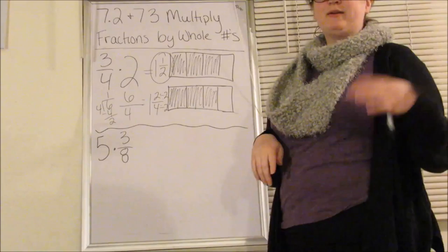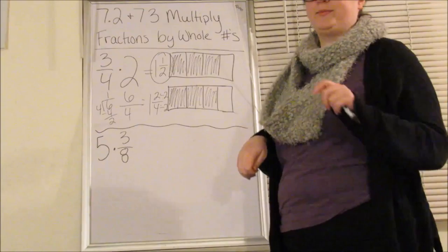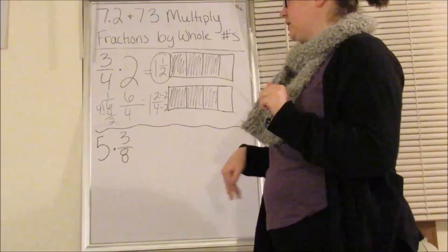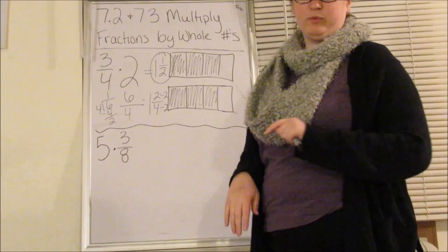My denominator told me how many parts there are going to be. My numerator tells me how many of those parts I'm going to be coloring and my whole number tells me how many of those I have. So that's how we do the model.